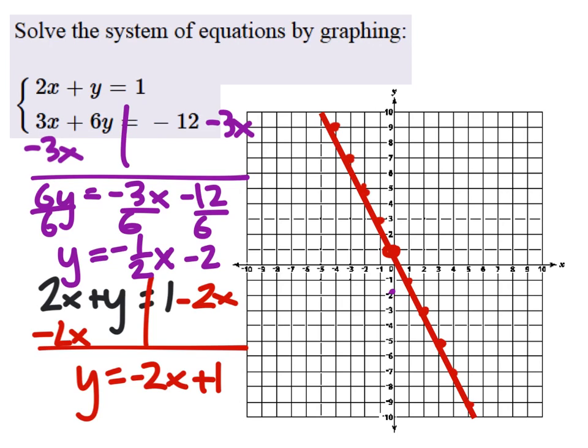So we got the y-intercept at 0, negative 2, with the slope of up 1 to the right 2. So down 1 to the right 2, down 1 to the right 2, and so forth. Gives us these points.